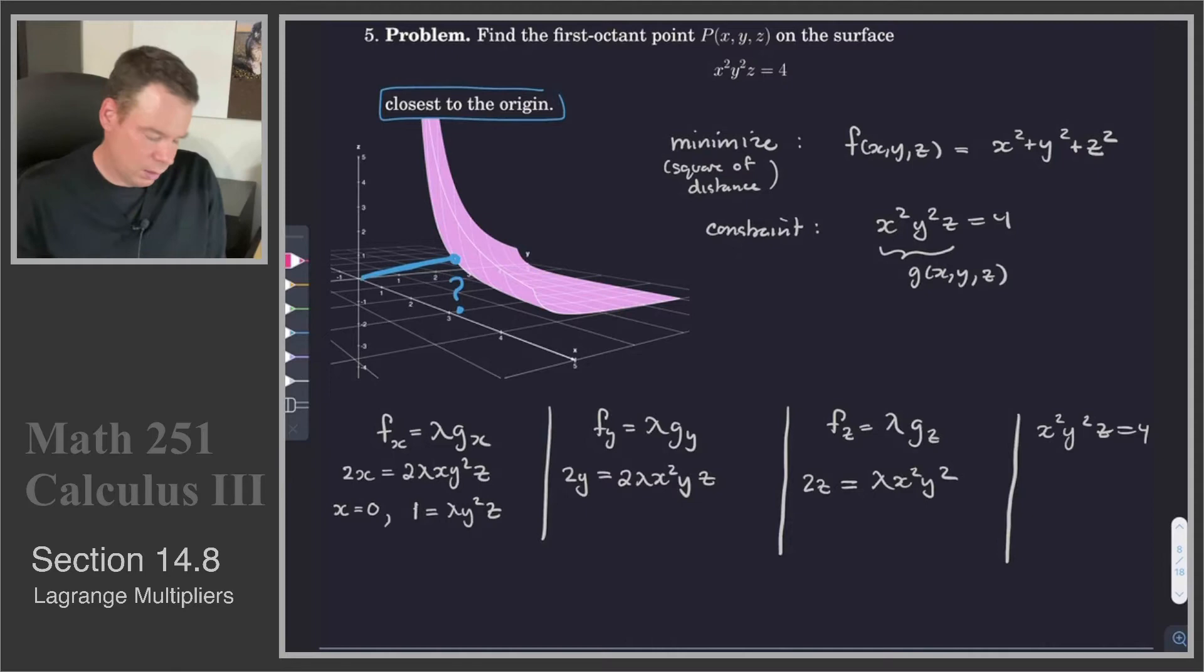Can x equals 0 be a solution? No, because the constraint says that x squared y squared times z all has to be 4. And so none of them can be 0. So that can't be a possibility. It would violate the constraint. So that first equation reduces down to 1 equals lambda y squared z. The second equation, by the same reasoning, would become 1 is equal to lambda x squared z.